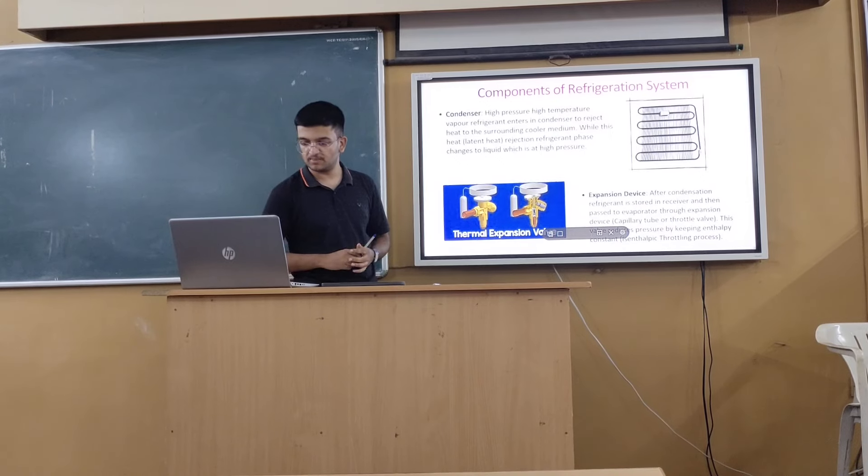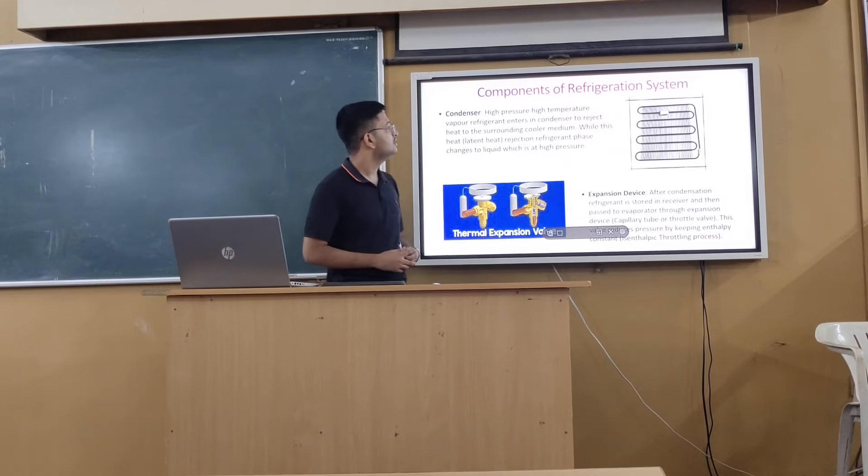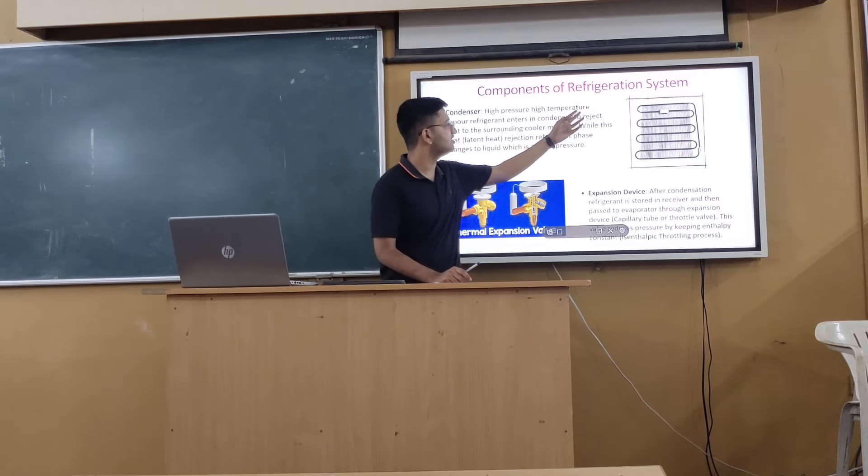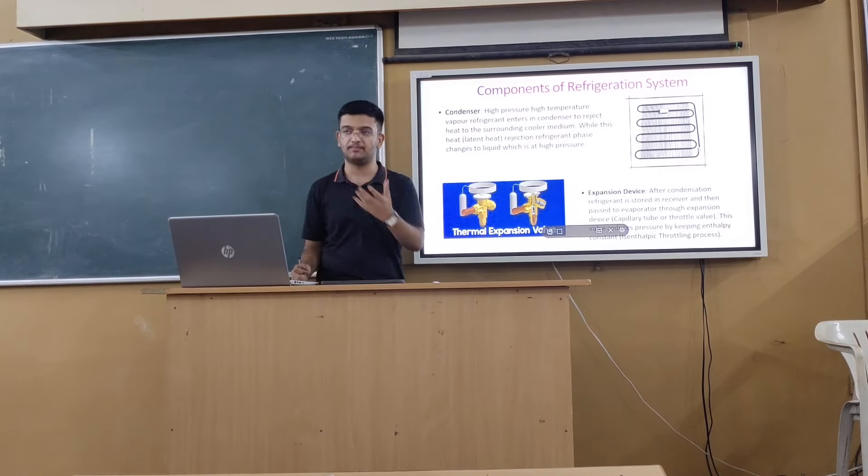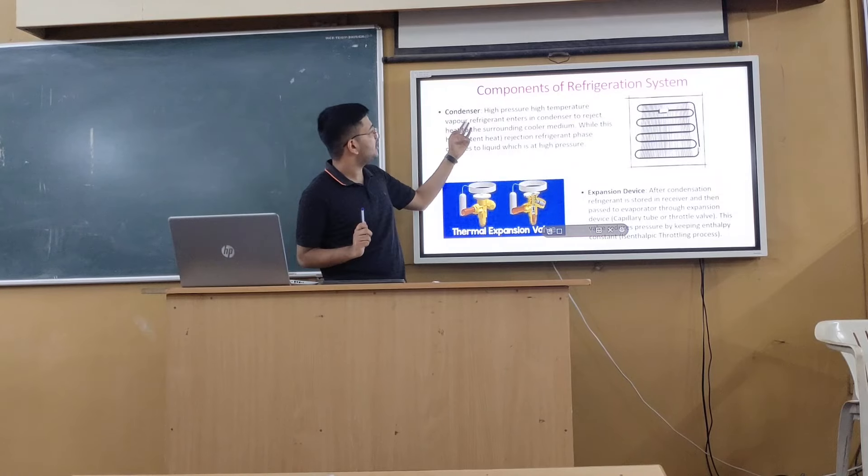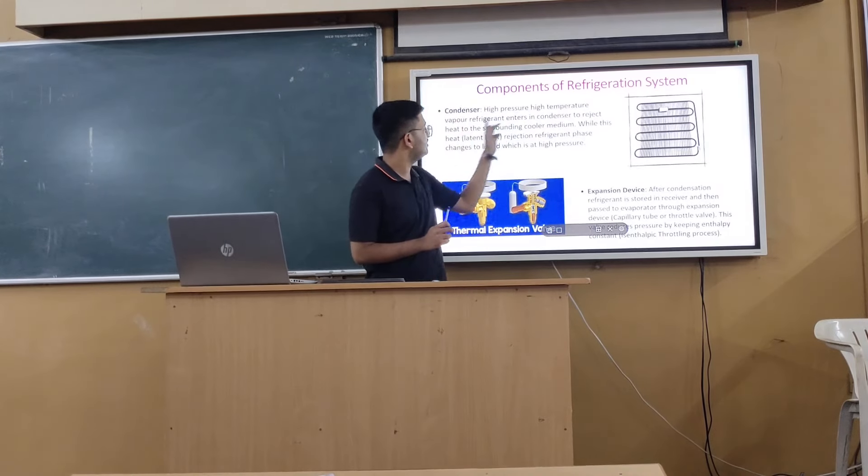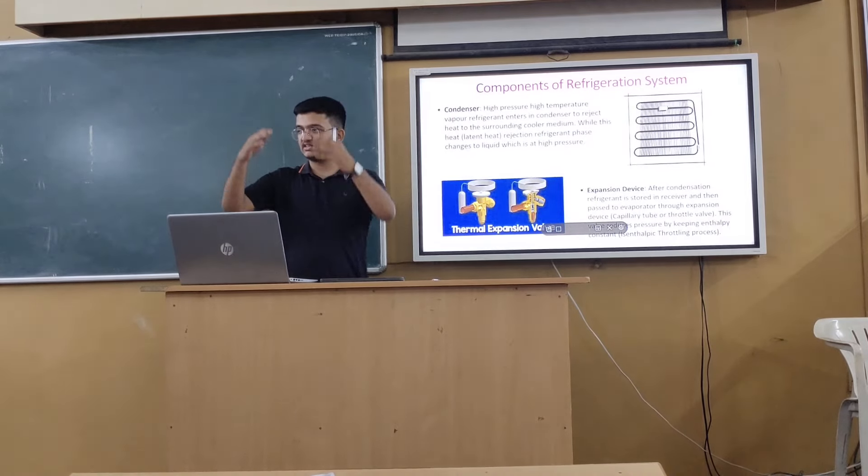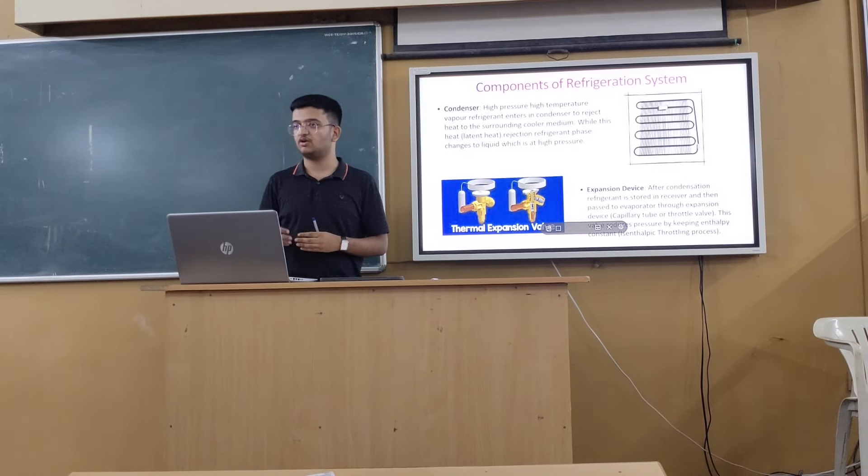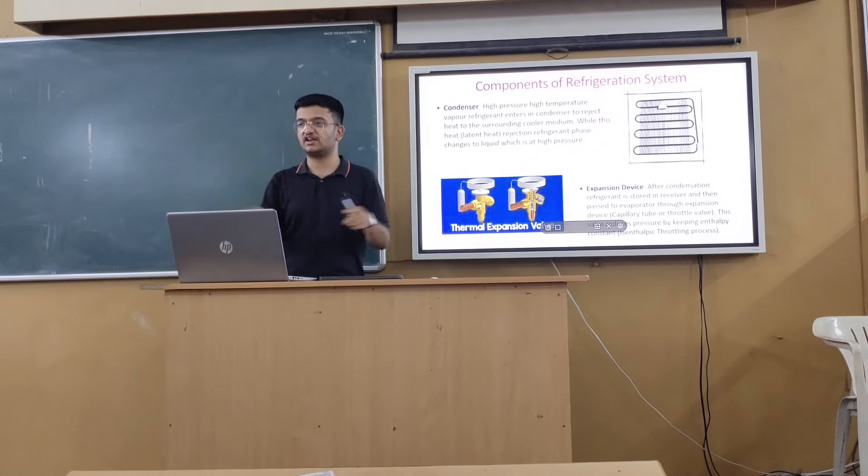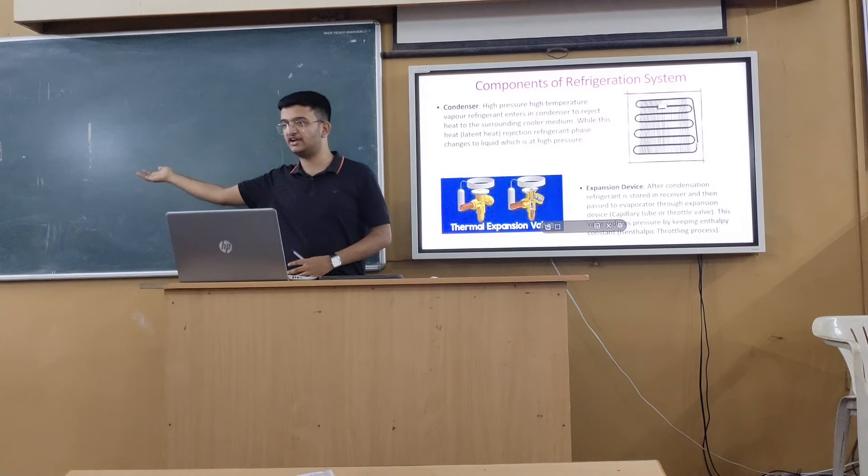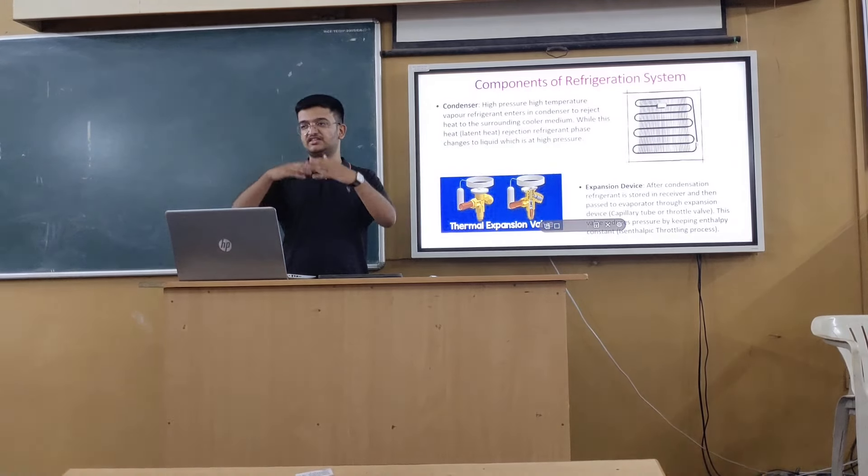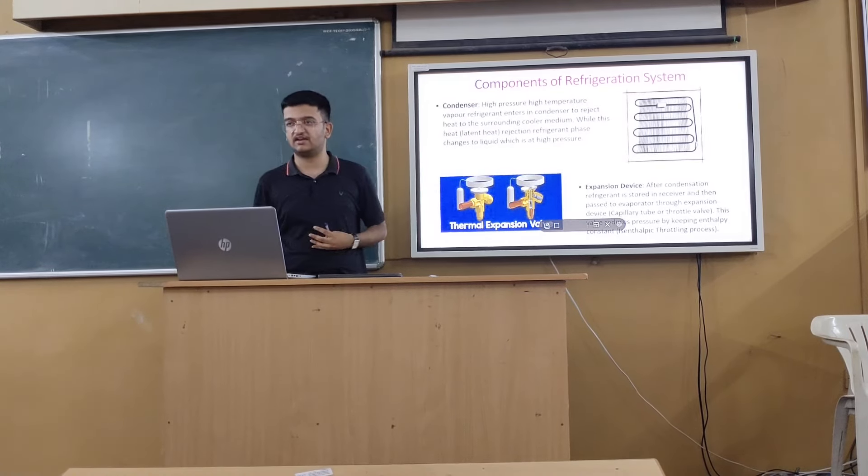The next component is condenser. What does condenser do? Whatever high pressure, high temperature refrigerant we got from the compressor, the vapor refrigerant enters into this condenser to reject the heat to the surrounding. The external part of your refrigerator or the external cabinet of AC is attached outside the space to be cooled. The condenser is located there. It rejects heat to the external environment.